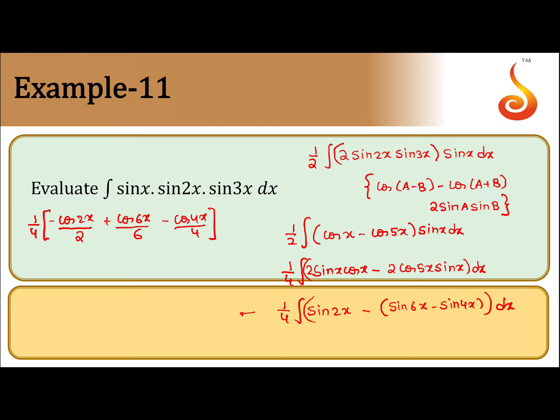Plus c, of course. 1/4 times [-cos 2x/2 + cos 6x/6 - cos 4x/4]. So again, you repeat: what is another formula?